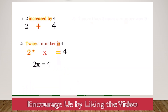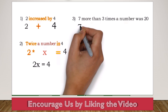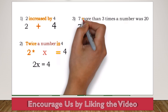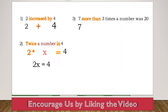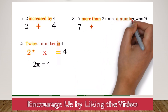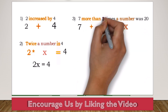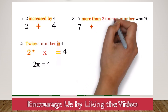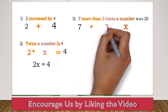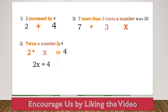Number 3: 7 more than three times a number was 20. We have 7 — 'more than' means addition, so we have plus. 'A number' is our unknown, represented by x, so 'three times a number' is 3x. Finally, 'was' means equals, so we have 3x plus 7 equals 20.